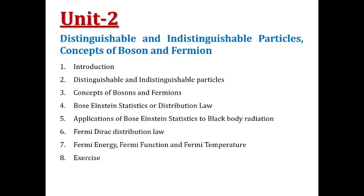Unit 2 contents include distinguishable and indistinguishable particles, and the concept of Bosons and Fermions. Bose-Einstein and Fermi-Dirac statistics are the modern — or quantum — statistics, which are based on quantum mechanics. The contents are: introduction, distinguishable and indistinguishable particles, concept of Bosons and Fermions, Bose-Einstein distribution law, applications of Bose-Einstein statistics to black body radiation, Fermi-Dirac distribution law, Fermi energy, Fermi function, and Fermi temperature, and finally an exercise. These two units belong to Statistical Mechanics, which is one of the branches of physics.